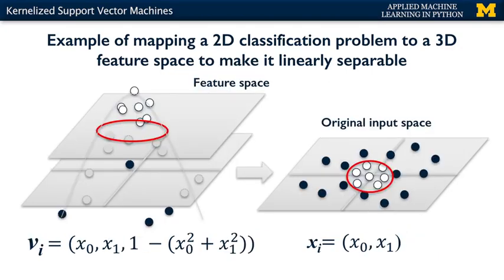Finally, the decision boundary consists of the set of points in 3D space where the paraboloid intersects the maximum margin hyperplane decision boundary. This corresponds to an ellipse-like decision boundary in 2D space that separates the white points from the black points in the original input space.